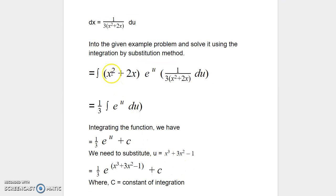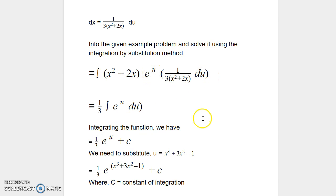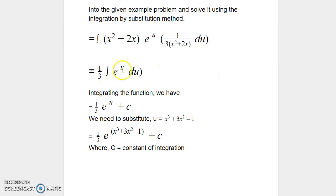As we can see, x² + 2x appears in the numerator and in the denominator, so those terms cancel out. We have 1/3 as a constant, so we can pull it outside of the integration: 1/3 times the integral of e^u du. We know that the integral of e^u du = e^u + c, so therefore we can rewrite this as 1/3 e^u + c.